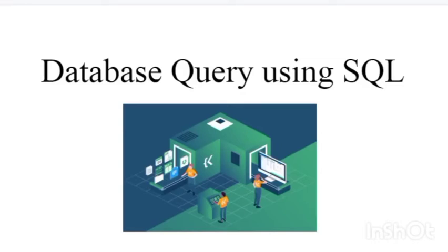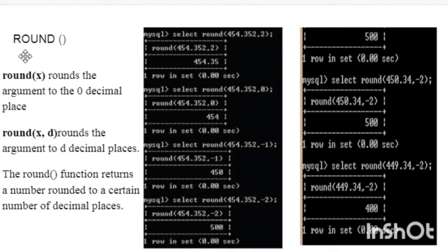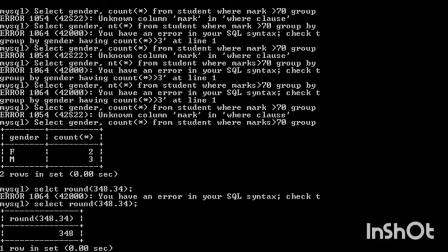Let us start our chapter: Database Query using SQL. We started this chapter in the last class and studied about the different functions of MySQL — math functions, date and time functions, and string functions. We discussed math functions, and in that we have done only a few examples. Now let us see the working of the ROUND function, so let us run a SELECT statement.